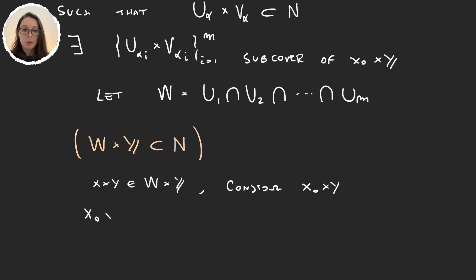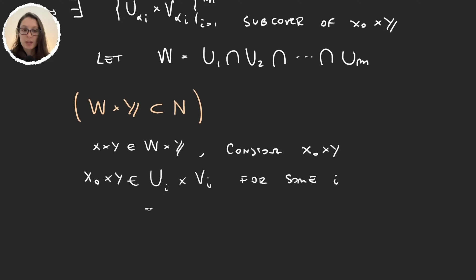and so x₀ times y is an element of W_i times V_i for some i. So then y is an element of V_i, but now x is an element in W, and W was the intersection of all these sets,